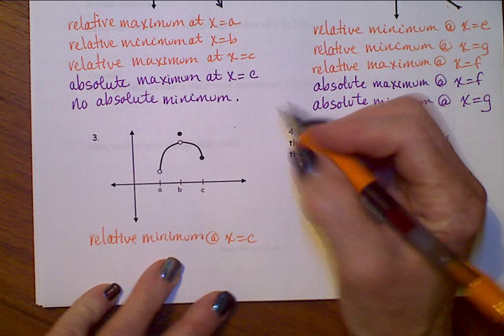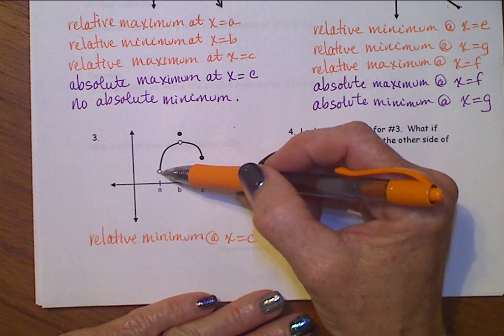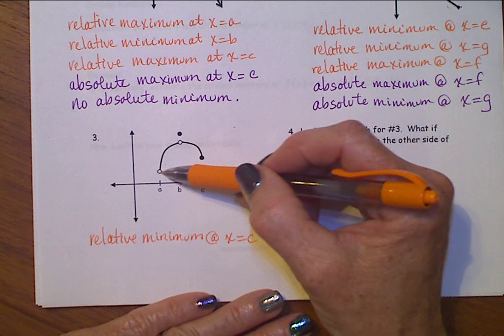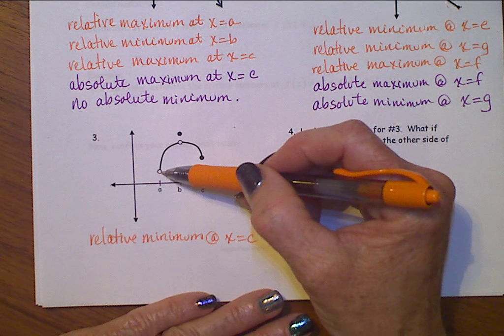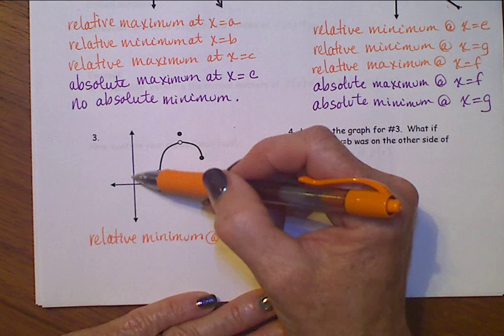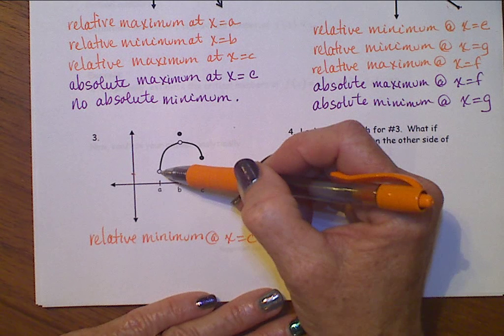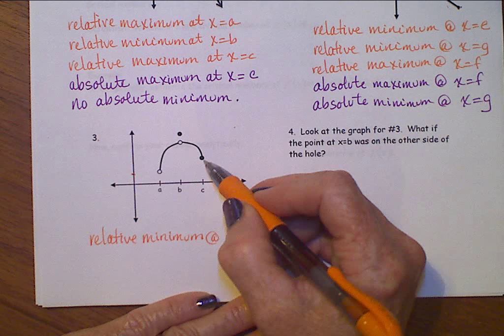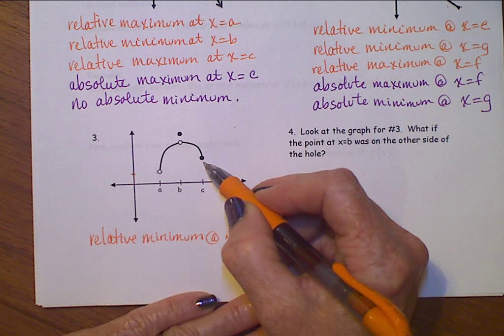There is no relative minimum here at x equals a because we never get to this particular y-value that's here at a. There's a hole here, so there's always something that's a little bit closer to that particular y-value here. There will always be another point in between, so this is the only relative minimum value over here at x equals c.